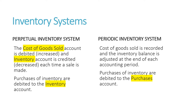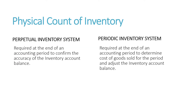Recall that cost of goods sold is an expense account and is increased by debits. Under a periodic inventory system, on the other hand, we do not continuously update the inventory account. When we purchase inventory, we use an account known as purchases, and cost of goods sold and the inventory balance are only adjusted at the end of the accounting period. So with a periodic inventory system, a physical count of inventory is required to be able to compute cost of goods sold for the period and adjust the inventory account balance.